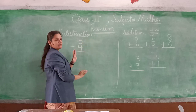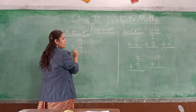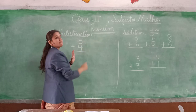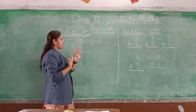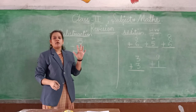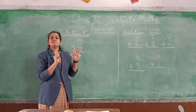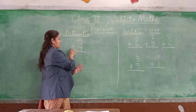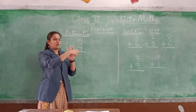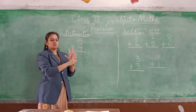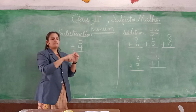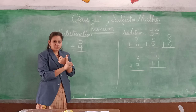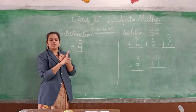We have opened 5 fingers practically. Which is the second number? 4. So we will subtract it. We remove 1, 2, 3, and 4 fingers. What is remaining? 1. So the answer is 1.